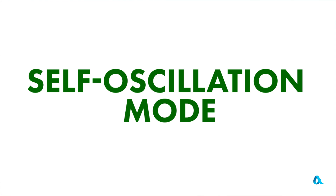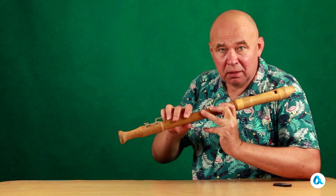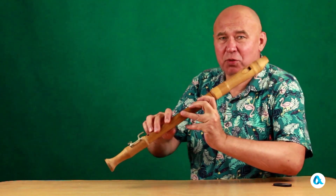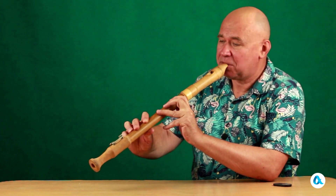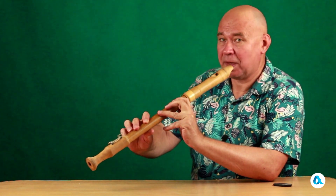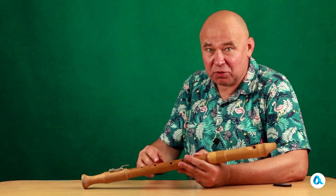When I tap my finger on one of the flute's holes, a sound is also heard. Although it is not loud and quickly fades away, it is essentially the same tone. And when I blow, the energy of the air stream somehow transfers into the energy of the air column's oscillations. We need a mechanism to explain this transfer.